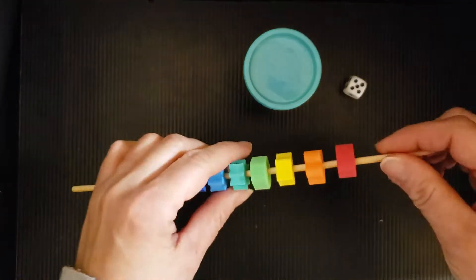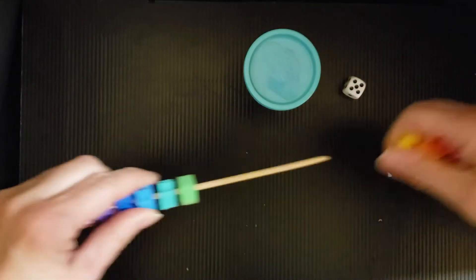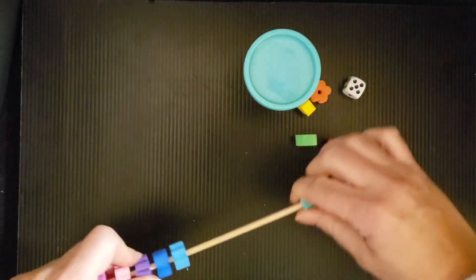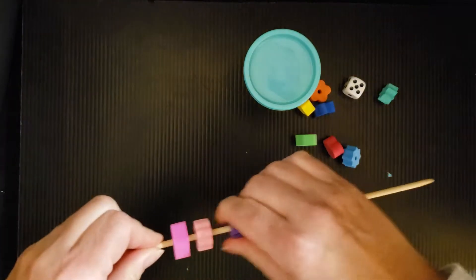So for this activity, we're going to just start by taking the foam shapes off our craft stick. One hand holds, one hand works.